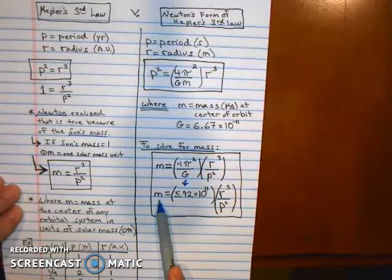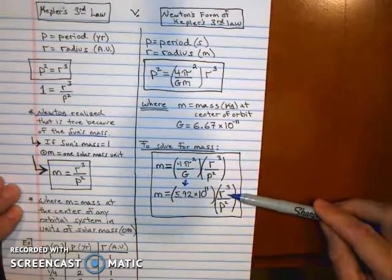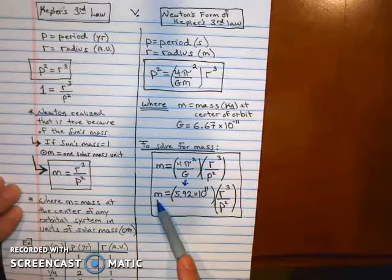And if you want to find the mass, say, of Earth, all you have to do is know the radius of an object orbiting Earth from Earth's center and its period of orbit around Earth. If you want to know the mass of Jupiter, which we're going to do, you just have to know the radius of something orbiting Jupiter and its period of orbit.